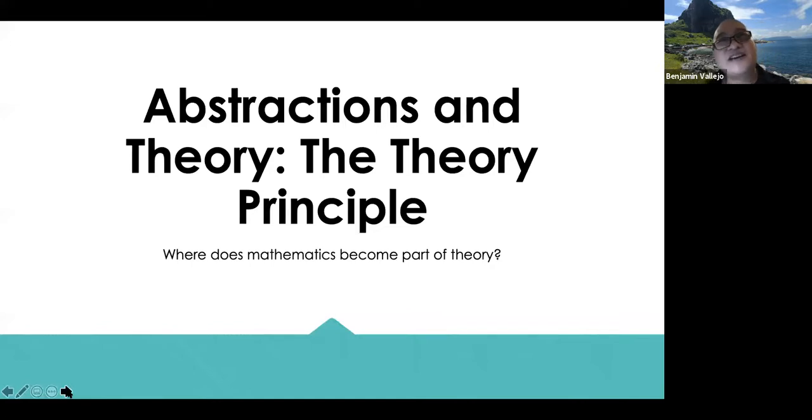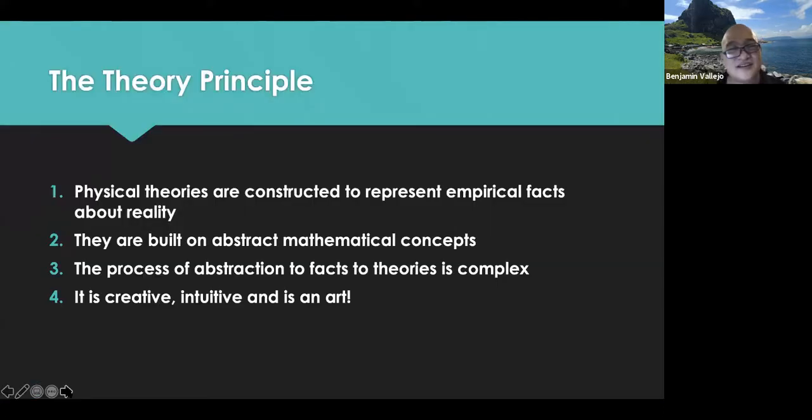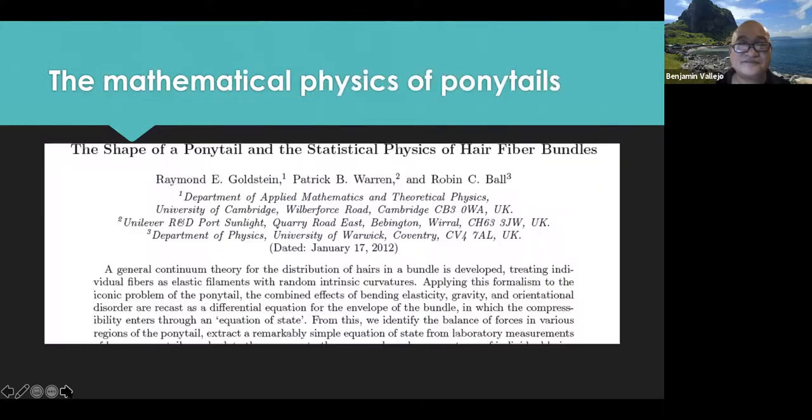You have a theory, you know your facts. How can you make sure that your facts could be repeated by other researchers? Then we need to come into the idea of an abstraction of a theory. In science, we abstract. We make the theory abstract by using mathematics. Theories in science are constructed to represent empirical facts about reality. In order for us to be more exact, we need to express it as a mathematical concept. And the process of abstraction to facts is rather complex. The abstraction of facts to theories is complex. It's creative, intuitive, and is an art.